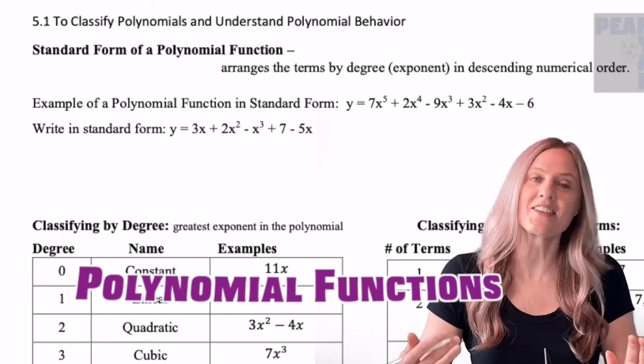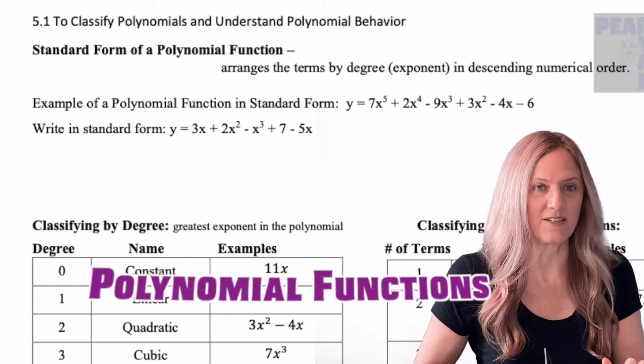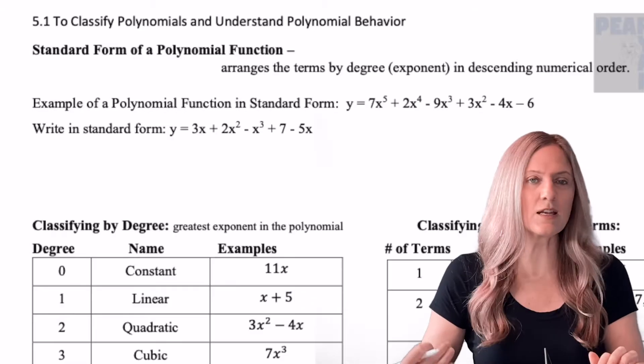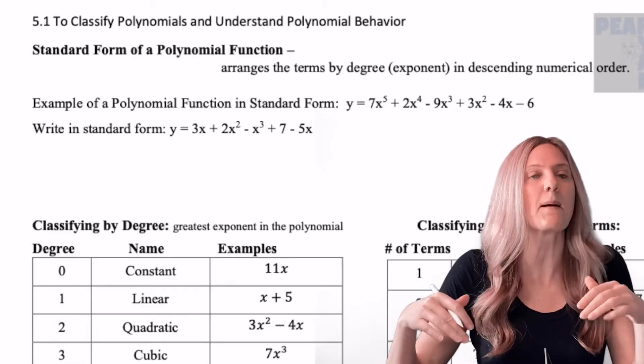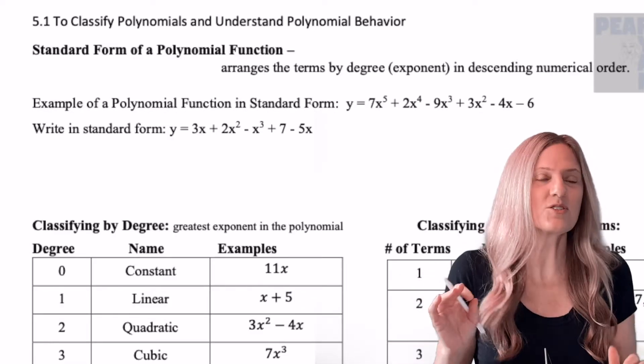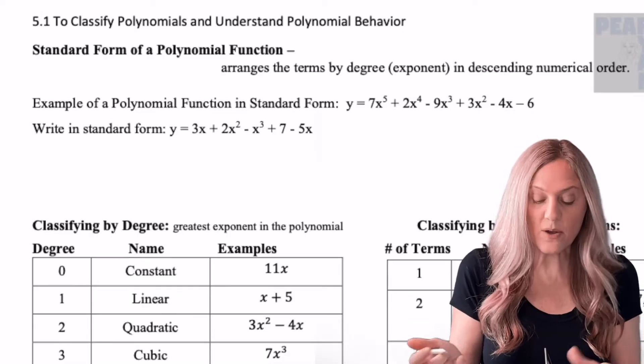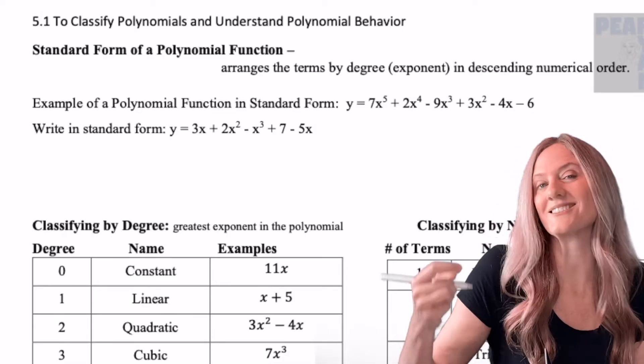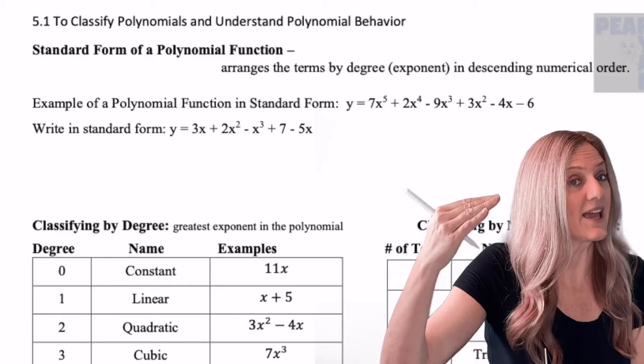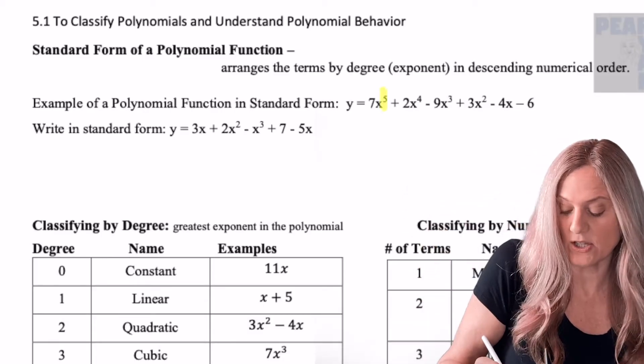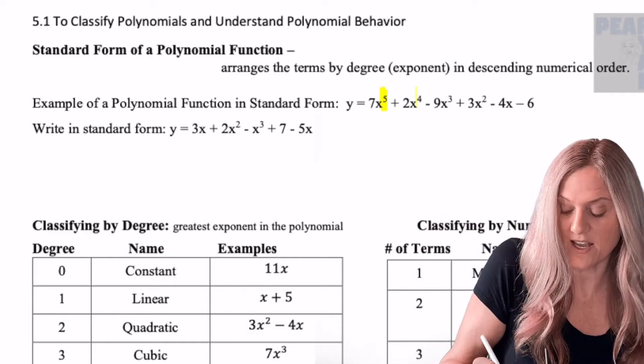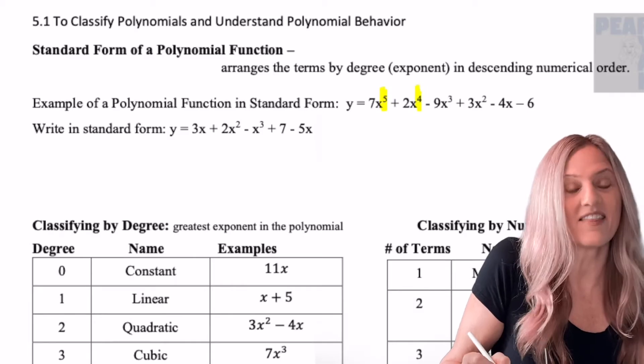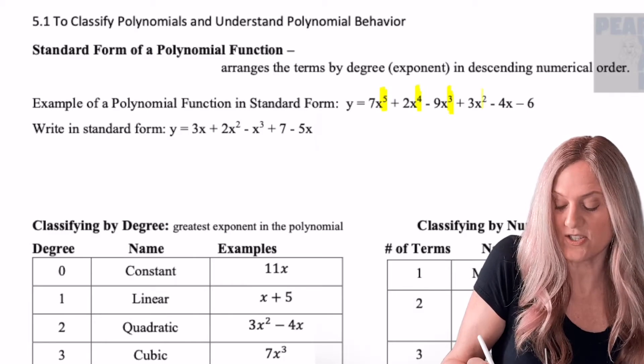Polynomial functions. The standard form of a polynomial function arranges terms in order from greatest to least by exponent. Take a look at the example. We notice that we start with 7x to the 5th. The 5th is what I care about - that is the largest exponent in the polynomial. Then I go to the next term with a 4, the next term with a 3, and so on.